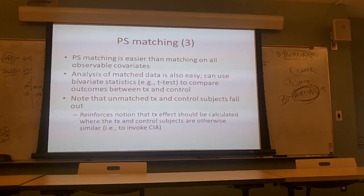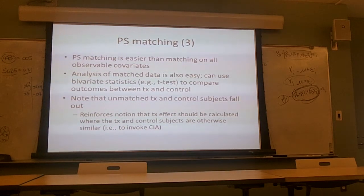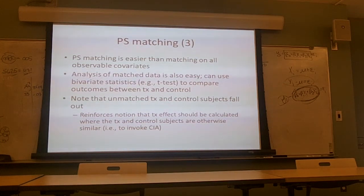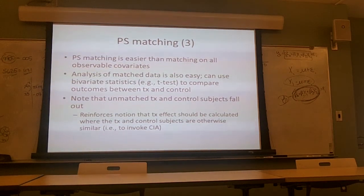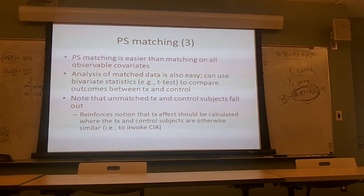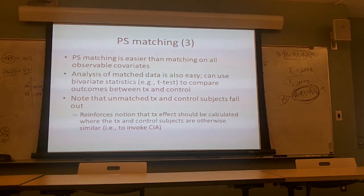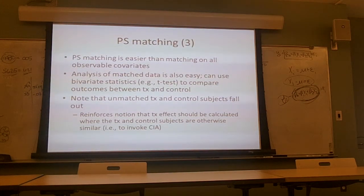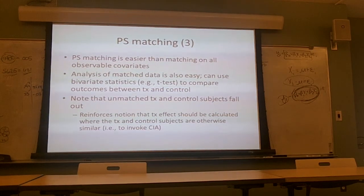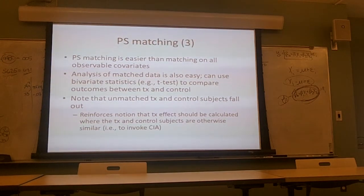Propensity score matching is nice because it's much easier than matching on all observable covariates directly, and you're more likely to get a good match on a propensity score than on a vector of 100 covariates. Once you have matched data the analysis can be very straightforward — it's like a randomized control trial without natural randomization. You've got treatment and control; you can do simple bivariate statistics like t-tests, or make it more complicated. Note that there'll be some shrinkage of the sample because you're throwing out observations on either side that don't match well.